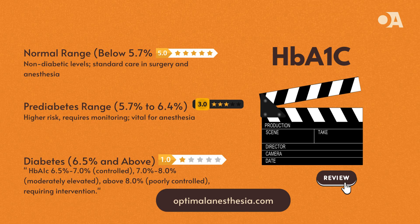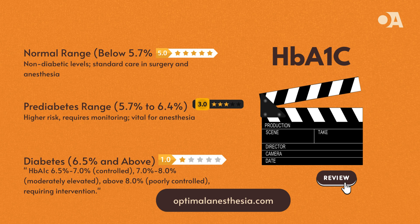So why is HbA1c important? The percentage of hemoglobin with glucose attached — the HbA1c level — reflects the average blood sugar levels over the lifespan of a red blood cell, about 120 days. This measurement is most accurate for the last 8 to 12 weeks. Think of it as counting the flies on the plates over a period of time — it gives a clearer picture of how sugary your kitchen has been.